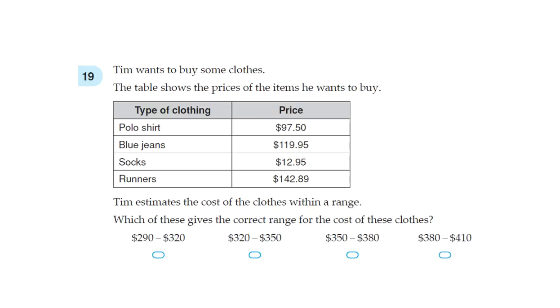Now question 19. Tim wants to buy some clothes. The table shows the prices of the items he wants to buy. So these are the items and these are the prices. Tim estimates the cost of the clothes within a range. Which of these gives the correct range for the cost of these clothes?